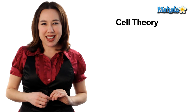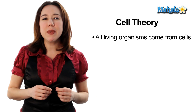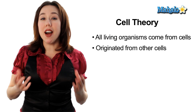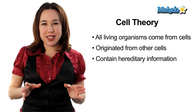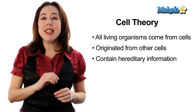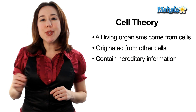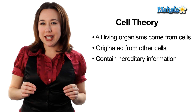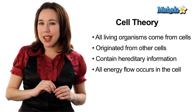Simply put, the modern cell theory states that all living organisms come from cells, and these cells originated from other cells. Also, all of these cells contain hereditary information that's passed from cell to cell through cell division. And lastly, all of the energy flow of life occurs in the cell.